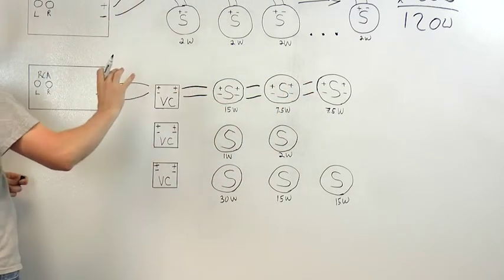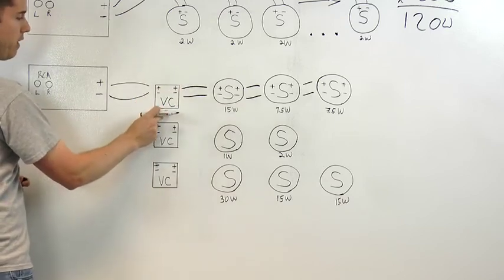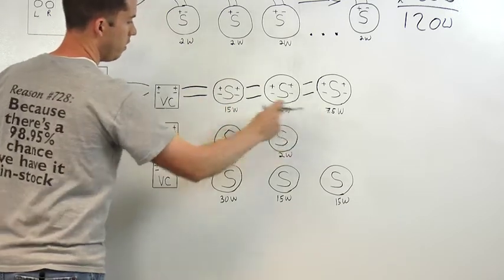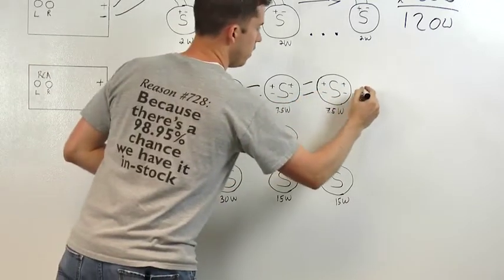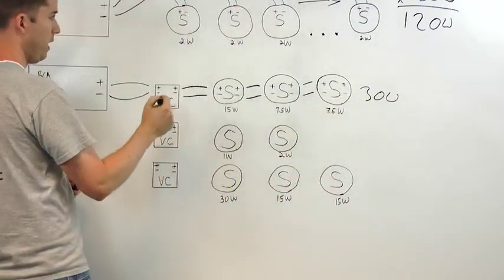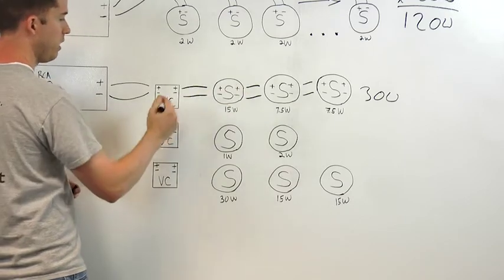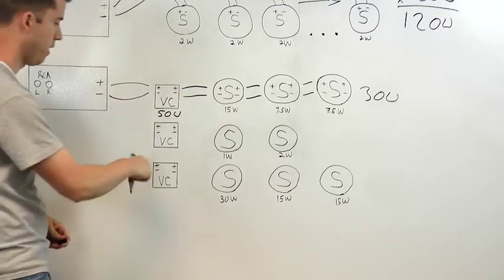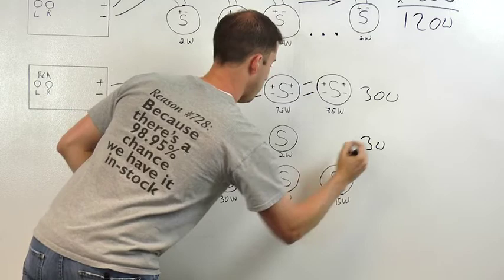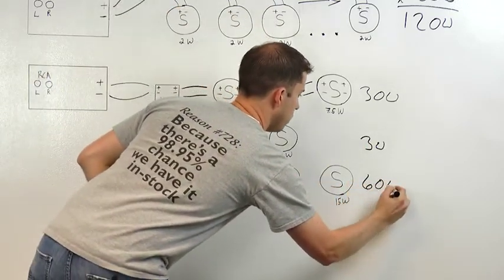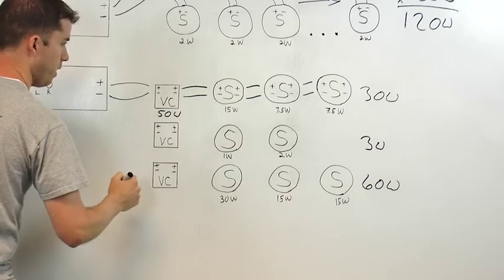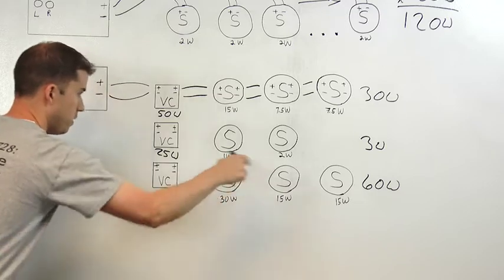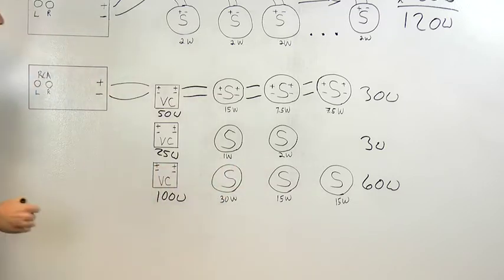Now, what we need to do next is determine the power handling for the volume control with all these speakers connected to it. So we simply add the tap setting here, here, and here. 15 plus 7.5 plus 7.5 is 30 watt. So we know we need a volume control with at least 30 watts plus our line loss. So we'll say a 50 watt volume control. And we'll do the same thing for volume control in zone 2 and for zone 3. So zone 2, we had 3 watts there. So we'll do a 25 watt volume control here. And zone 3, we have 60 watts, so we'll do 100 watt volume control for zone 3.